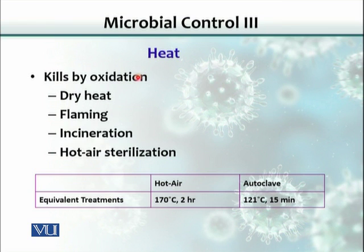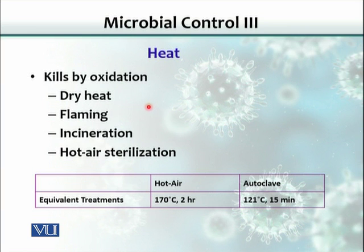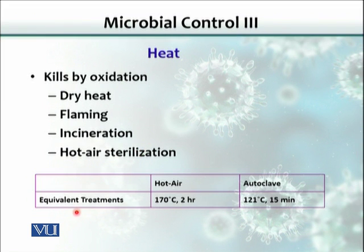Heat kills by oxidation, which is the process that kills organisms by heat. Dry heat can also take the form of flaming — a common lab example is flaming of the platinum loop for transferring or streaking organisms onto a plate. Incineration is another type where we burn the organism. Hot air sterilization is the same as the dry oven method.